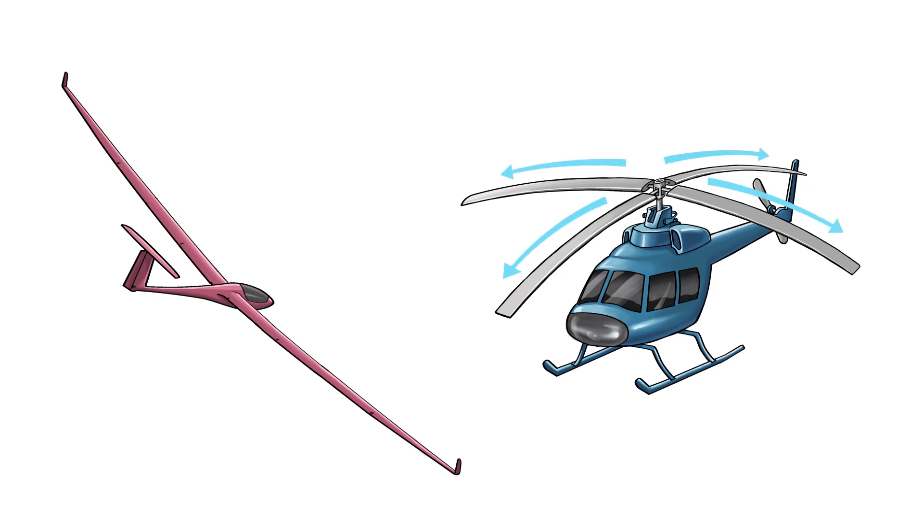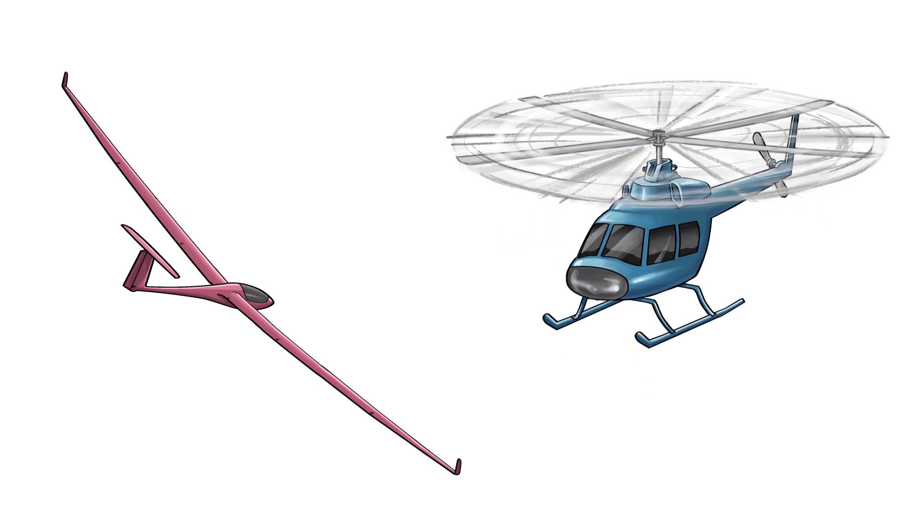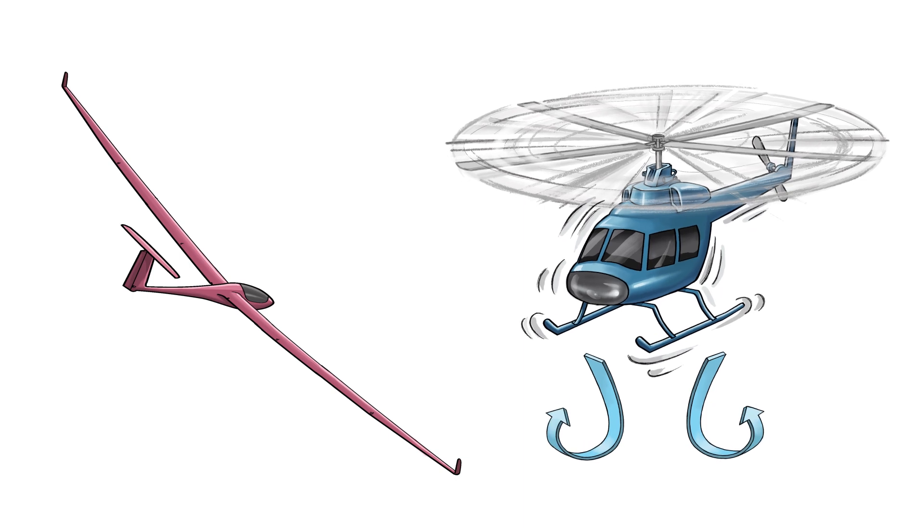Now think of a helicopter. Rotors that droop under their own weight become rigid once spinning, but that has a lot of turbulence.